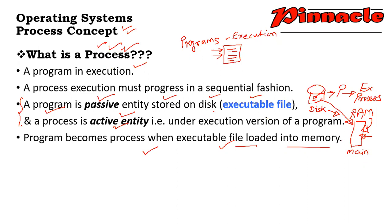If the file is executable and the particular program is executable, it is obvious that it is a process. If it is not executable, it will not be executed. This is the process concept — the process is the basic unit.